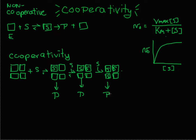The second thing you need is for the affinity of the enzyme for the substrate to change after the first substrate binds. And this is what you see for positive cooperativity — the affinity of the enzyme for the substrate increases after the first substrate binds, and it gives you this typical S-shaped curve.